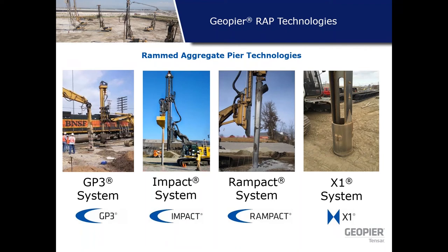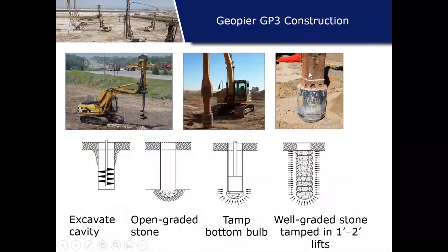Before talking about rigid inclusions, let's make sure everyone is comfortable with rammed aggregate peers. We have a lot of RAP and RI technologies. Most people are familiar with the GeoPier system — our first system now on its third iteration — which is a drilled system. If you have issues keeping holes open, you may move to an impact or RamPak system using a displacement mandrel. We also have hybrid systems such as the X1, which primarily drills but can also displace through limited depths if there's a caving concern.